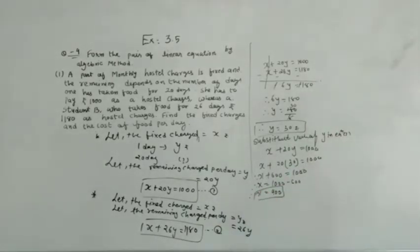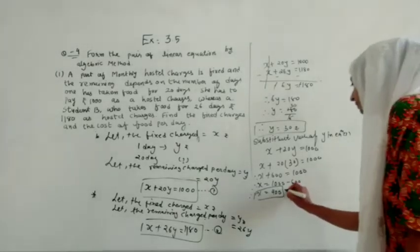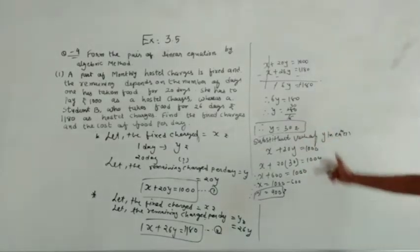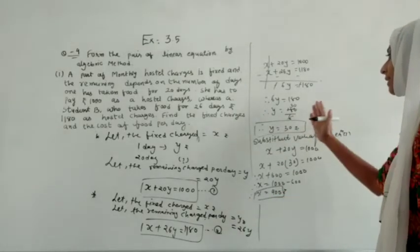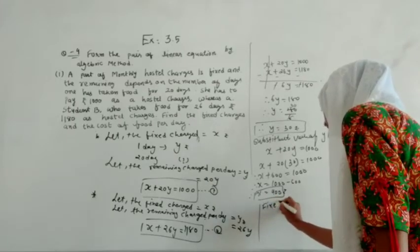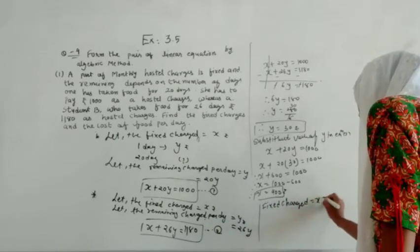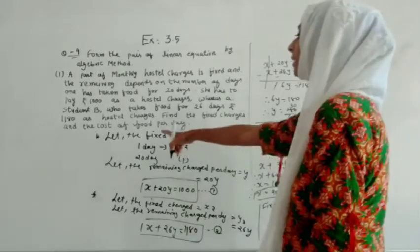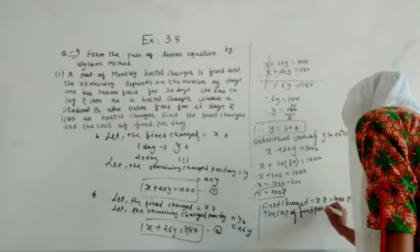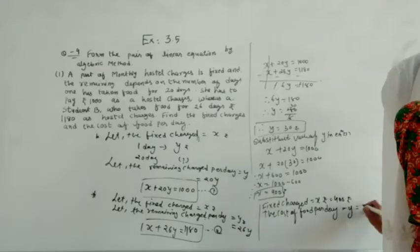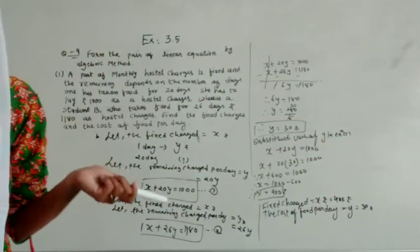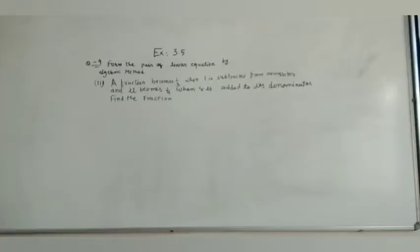So the fixed charge, which we pay regardless, is 400 rupees. The per-day food charge is 30 rupees. According to the number of days, the payment will increase, but the fixed charge remains 400 rupees. So this is the answer: fixed charge X equals 400, cost of food per day Y equals 30 rupees. This is quite an easy question.